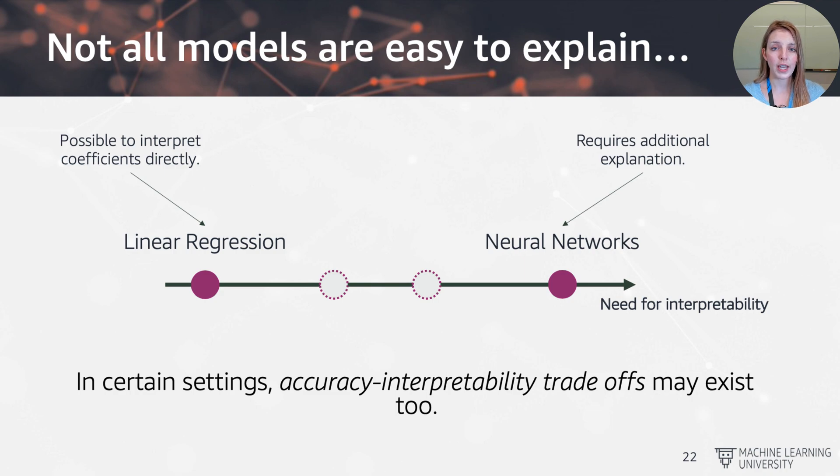So the range that we have here is going from linear regression to neural networks, where a linear regression is actually seen as the algorithm example. It's a combination, addition of all the individual features that we have in our data set with the weight or parameter factor in front of it. And you can actually explain the coefficients directly. So it is possible to interpret each of the coefficients, each of the weights directly.